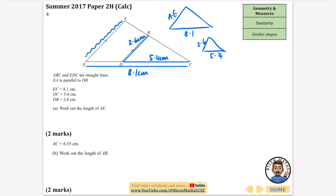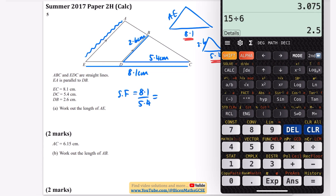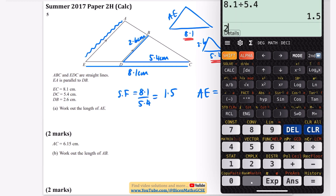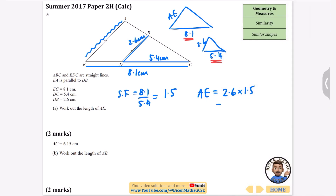There are lots of ways to do these — I'm going to find the scale factor by dividing the corresponding sides. Scale factor = 8.1 ÷ 5.4 = 1.5. So all lengths are multiplied by 1.5 going from the small triangle to the big one. To find AE, I take 2.6 and multiply by 1.5: 2.6 × 1.5 = 3.9. So AE is 3.9 centimeters.